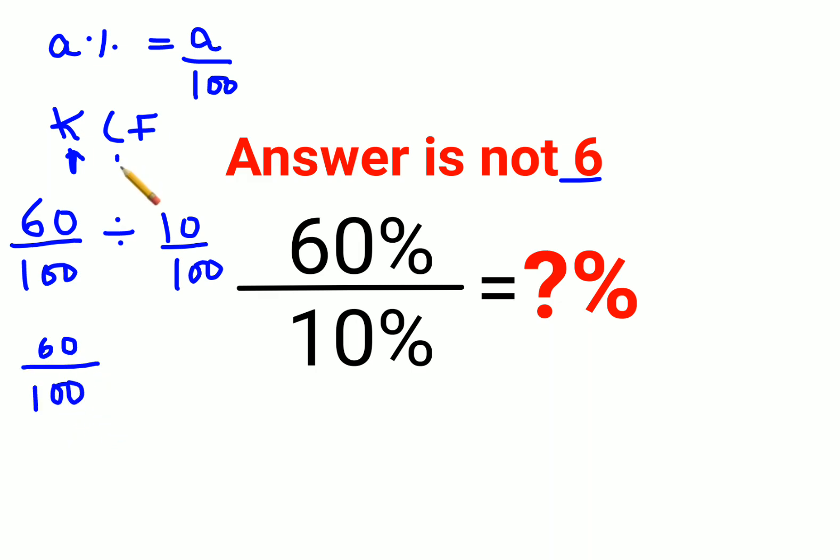And C stands for changing the division sign to multiplication and F stands for flipping or taking the reciprocal. Reciprocal of 10 upon 100 is 100 upon 10.